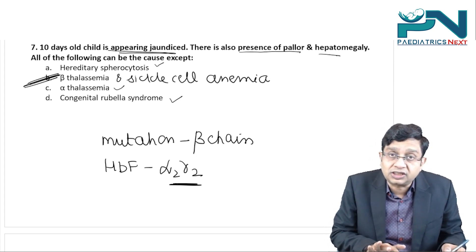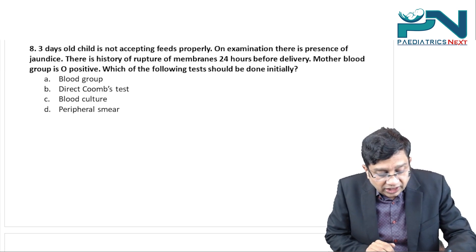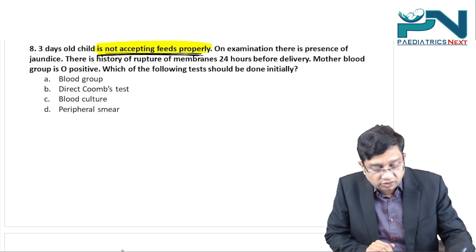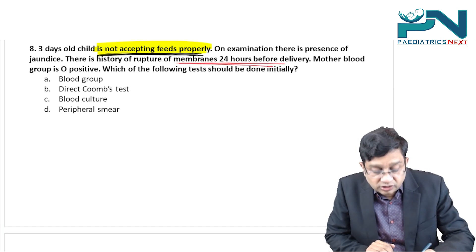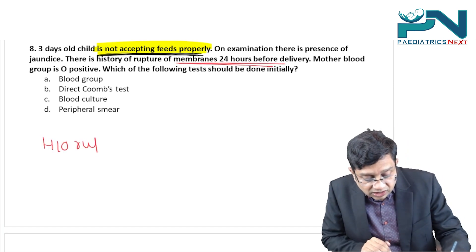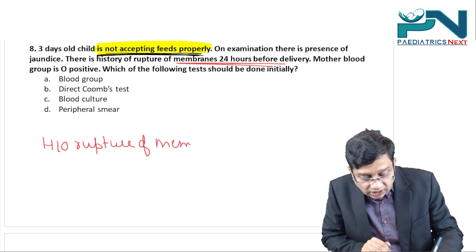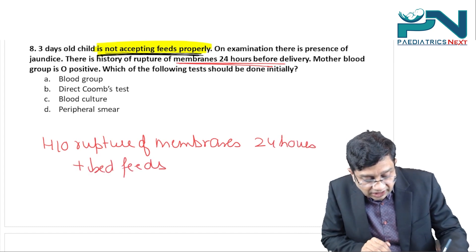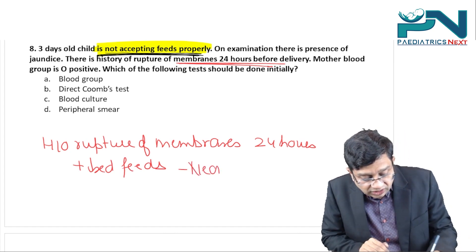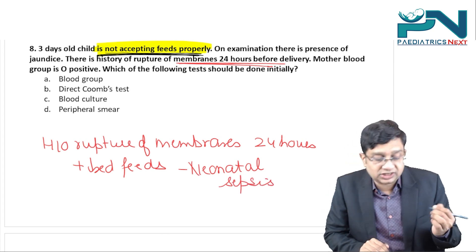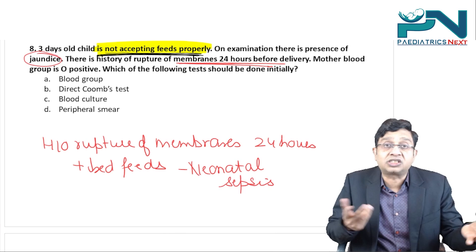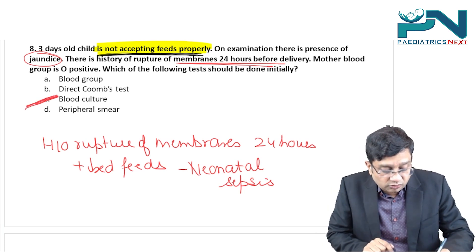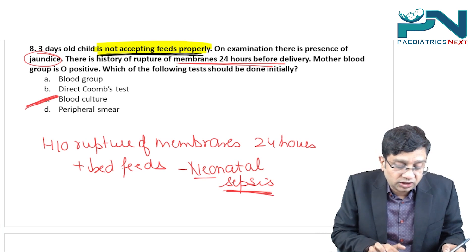A three-day-old child is not accepting feeds properly, has jaundice on examination, and there is a history of rupture of membranes 24 hours before delivery. Not accepting feeds plus rupture of membranes more than 18–24 hours before delivery are both pointers towards neonatal sepsis. Although the jaundice may be physiological or pathological, the first step among the choices given is to do a blood culture to rule out neonatal sepsis.